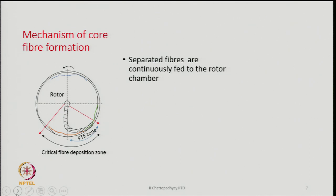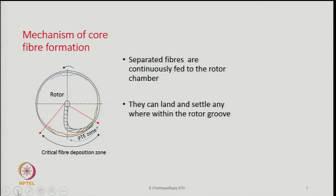Understanding how these fibers form is important because we will see what role each fiber type plays in deciding the properties of the yarn. If we want to regulate or control the property of a yarn, we have to regulate or control the formation of these fibers — particularly the mechanism of formation of sheath fibers and belt fibers.